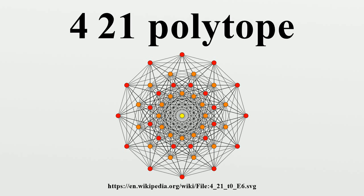These graphs represent orthographic projections in the E8, E7, E6, B8, D8, D7, D6, D5, D4, D3, A7, and A5 Coxeter planes. Edges are not drawn. The vertex colors are by overlapping multiplicity in the projection, colored by increasing order of multiplicities as red, orange, yellow, green, etc.